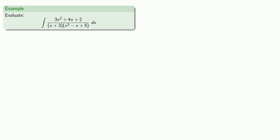Since the denominator is already factored, our theorem guarantees we can rewrite it as a sum of two rational expressions, where the denominators are the individual factors x + 3 and x² - x + 5.